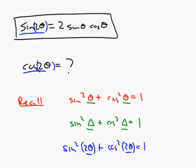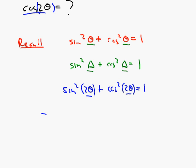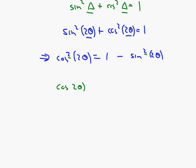Now I can do some algebra and solve for cosine 2 theta. First, cosine squared of 2 theta equals 1 minus sine squared of 2 theta. A quick editorial comment: I've never been crazy about the sine-squared cosine-squared notation. This really means the cosine of 2 theta, that whole quantity, squared. And this really means 1 minus the sine of 2 theta, that whole quantity, squared.